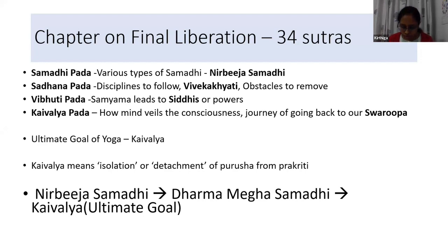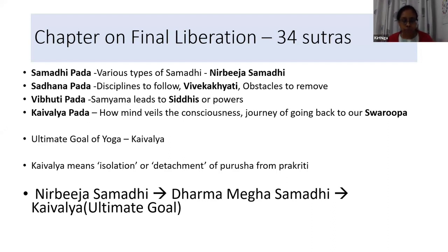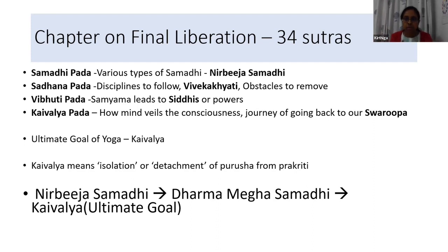In the third Sutra of the first chapter, Tadadrashtu Swarupa Avasthanam — that goal of Swarupa is being brought here in Kaivalyam. In Kaivalya Pada, things that were explained in Samadhi Pada, Sadhana Pada, and Vibhuti Pada are all taken together, but no new tools are explained in Kaivalya Pada. Everything is brought together to explain how Kaivalyam is going to be achieved.